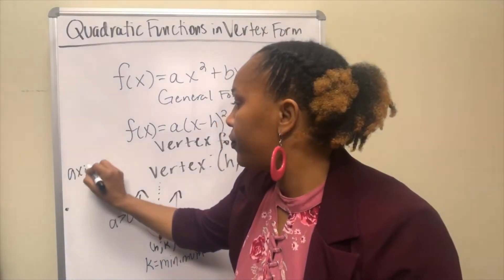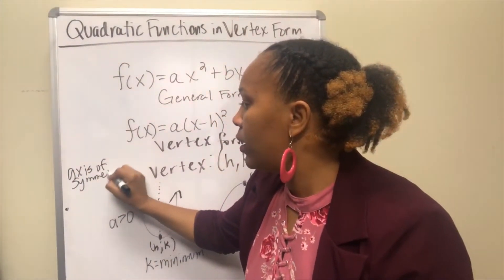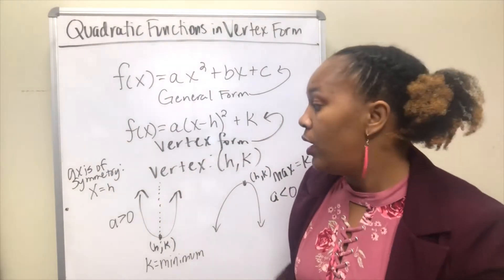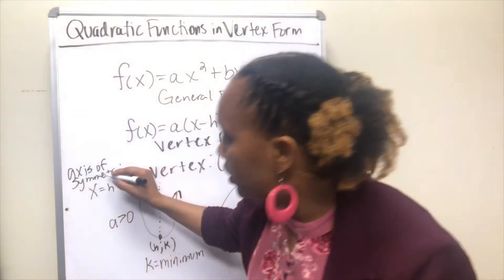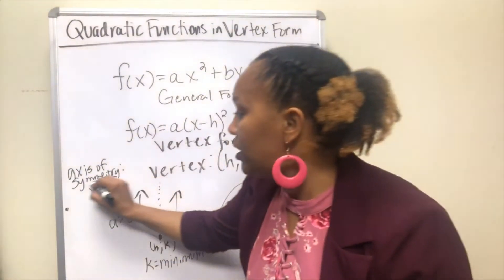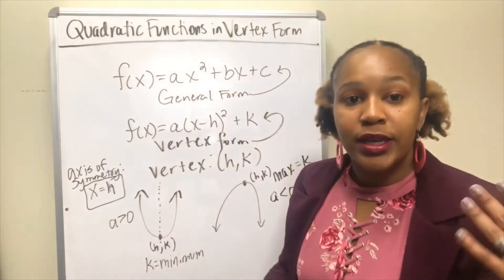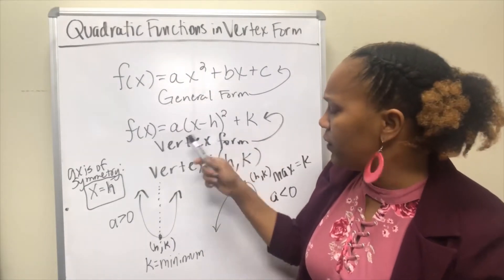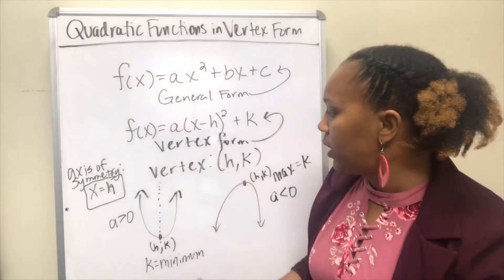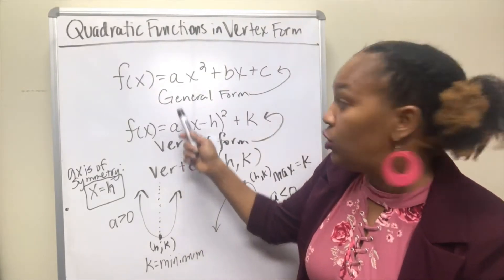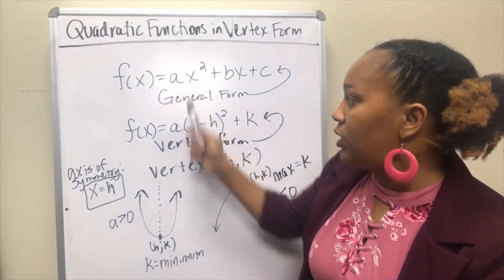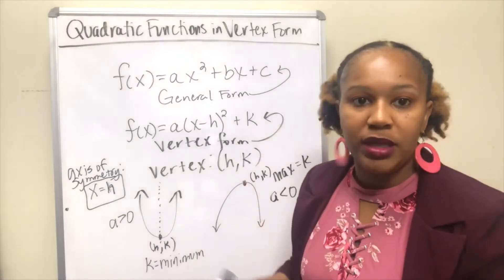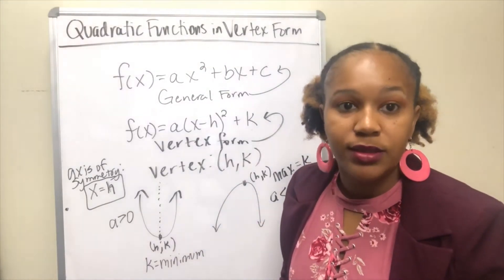The axis of symmetry is defined by the equation x equals h, because a vertical line is of the form x equals, and it passes through the x-value of the vertex, which is h. So it's the whole equation x equals h — not just h — that defines your axis of symmetry. To summarize, from vertex form we can identify the vertex coordinates, which way it opens, the axis of symmetry, and whether there is a minimum or a maximum.